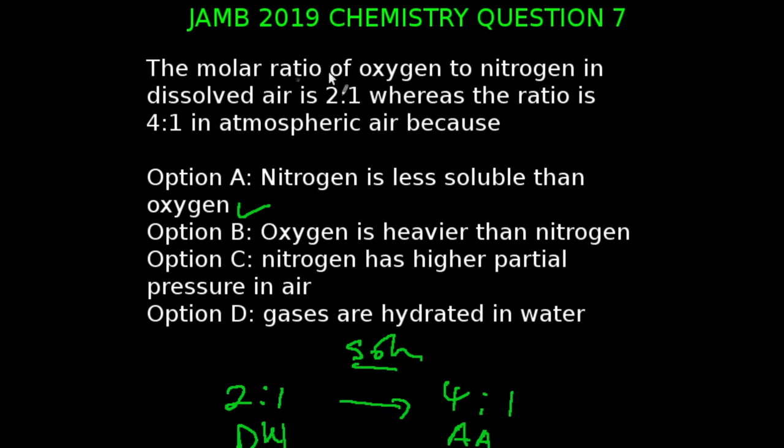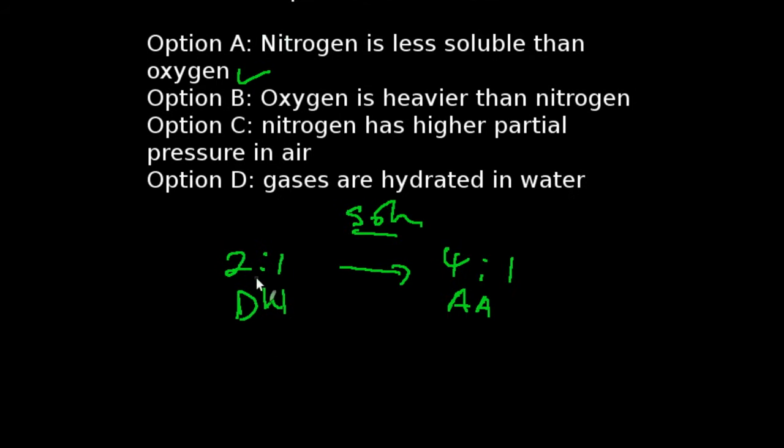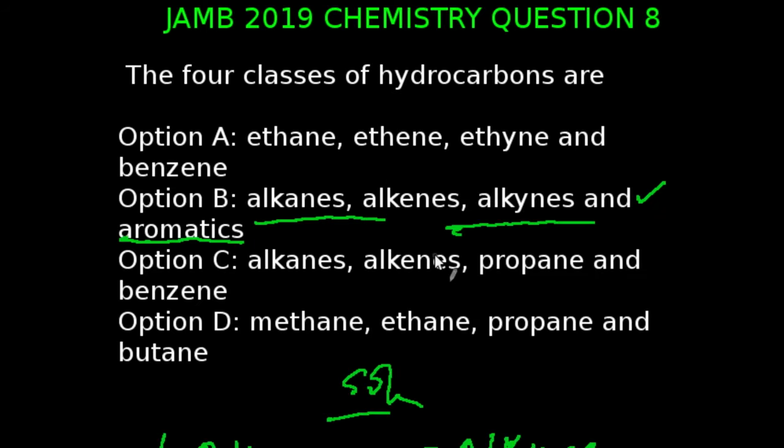You're looking at question seven of the JAMB 2019 chemistry examination. The molar ratio of oxygen to nitrogen in dissolved air is 2:1, whereas the ratio is 4:1 in atmospheric air because... When we look at the value of oxygen in atmospheric air, it's twice its original value. As the atmospheric pressure increases, the amount also increases. Therefore, we can deduce that oxygen dissolves more as the pressure increases and nitrogen dissolves less. Therefore, our answer will be option A, nitrogen is less soluble than oxygen.